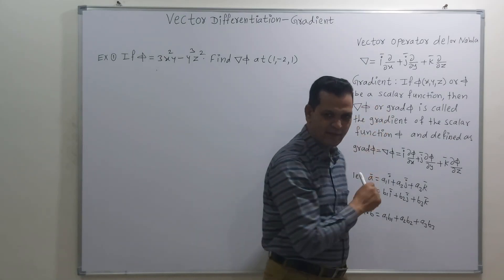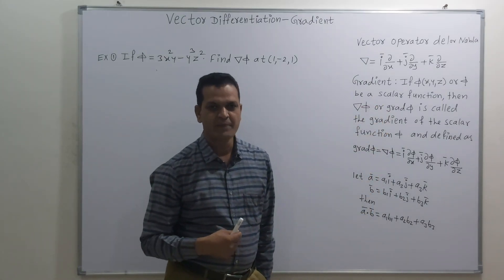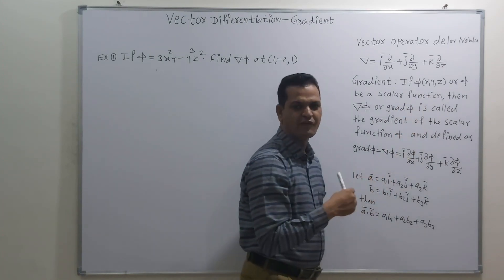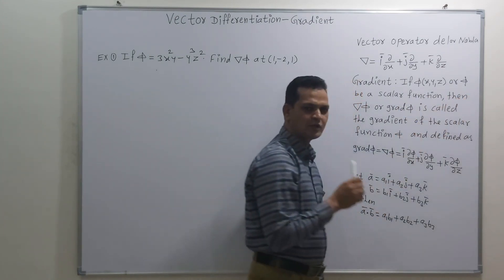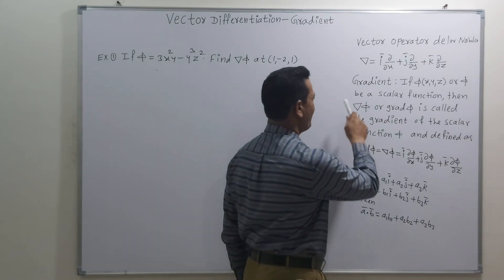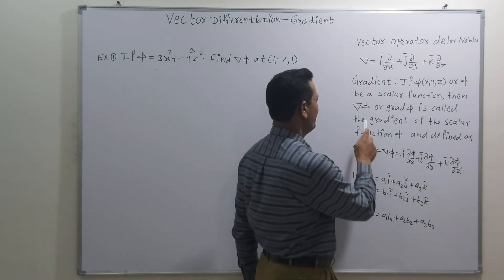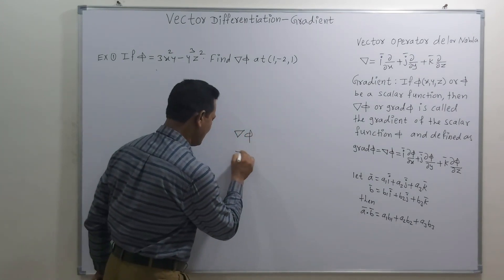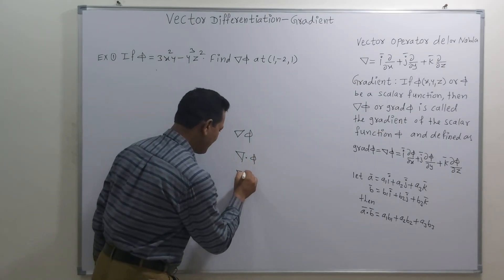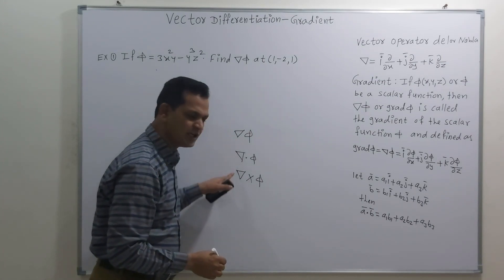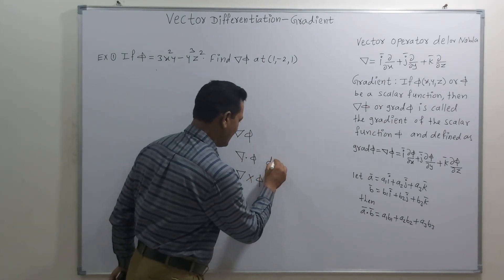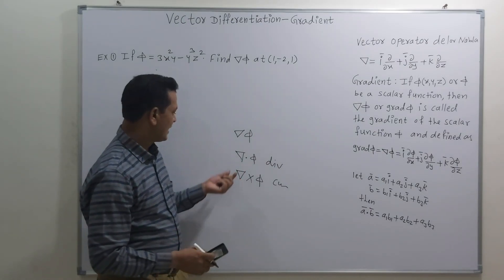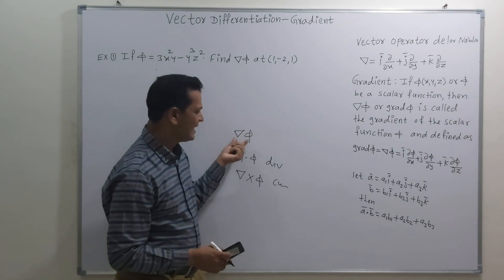The next definition is the gradient of a scalar point function. If φ is a function of x, y, z — a scalar function — then the gradient of φ is denoted by del φ. Note that del φ, del dot φ, and del cross φ are totally different notations. Del dot φ is called divergence and del cross φ is called curl, which we will learn in the next video lecture. So please understand: do not put a sign between del and φ, otherwise its meaning will change.